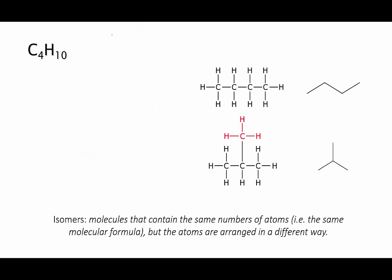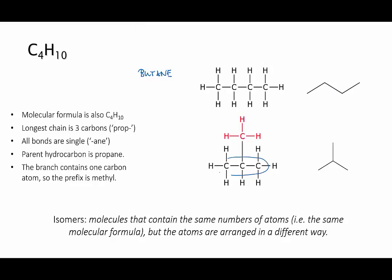So back to our second isomer. The naming rules say that we should find and name the longest chain in the molecule, so that's propane, and our list of branches says that a one carbon branch, like we have here, should be methyl. So the name of this molecule is methylpropane.